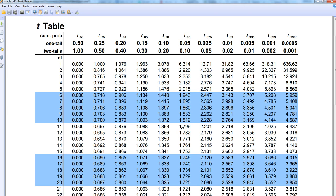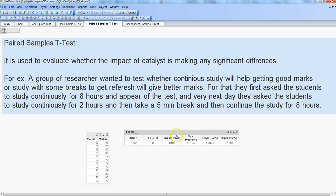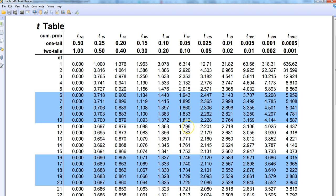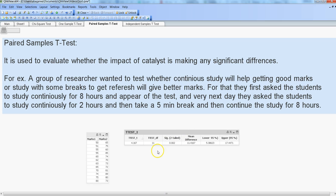We will reject the null hypothesis if the value is beyond 1.796, meaning greater than 1.796 at 11 degrees of freedom. The t-test value is 4.167, which is greater than 1.796. This shows that yes, the marks are significantly different from each other when you apply continuous eight hours study versus study where you are giving a five minute break after every two hours.